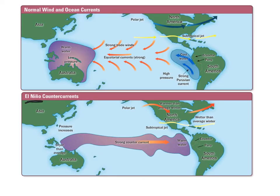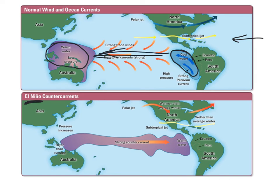El Niño is a really interesting event — one we appreciate here in the southwest because that's when we expect a lot of precipitation in the wintertime. The normal condition, which is also similar to a La Niña event, features warm water and a low pressure system over southeast Asia. That causes a strong Peruvian current with strong equatorial currents and strong winds blowing westward. Storms that form travel in that direction, so the moisture moves out that way.